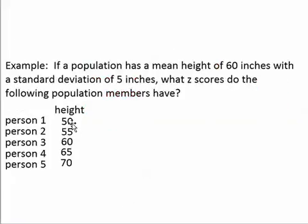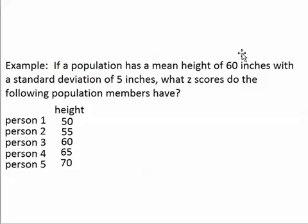Let's now go through an example in which we find the z-scores of 5 specific people. We're imagining that a certain population of people has a mean height of 60 and a standard deviation of 5. So if you took all of the heights of everyone in the population and calculated the mean and standard deviation of those heights, you would get 60 and 5. Now we're also imagining that we've taken a sample of this population.